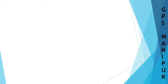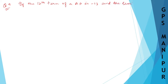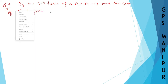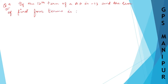Now we are doing exercise 6.2, question number 9. The question says: if the 12th term of an AP is minus 13, and the sum of the first 4 terms is 24, find the sum of the first 15 terms.